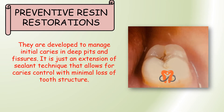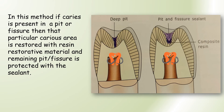Preventive resin restorations are developed to manage initial caries in deep pits and fissures — an extension of the sealant technique allowing caries control with minimal tooth structure loss. For a deep pit with early caries, we widen the pit using fissurotomy burs, excavate the caries, fill the base with composite resin, and seal it with a pit-and-fissure sealant. This minimally prepares the tooth structure while blocking the offending fissure.